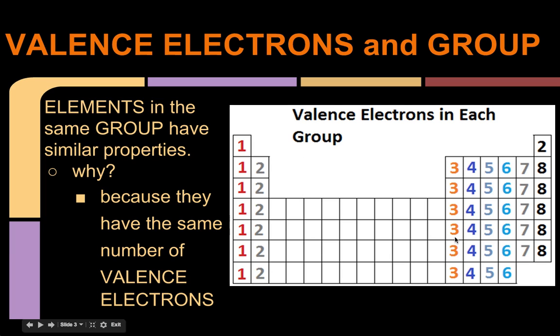Group thirteen, all the way over here, all has three, fourteen has four, fifteen has five, sixteen has six, seventeen has seven, and then group eighteen, all have eight except for helium. If you remember, helium is the exception because it only has two electrons. So that's a quick review over valence electrons and how they're related to the element group.